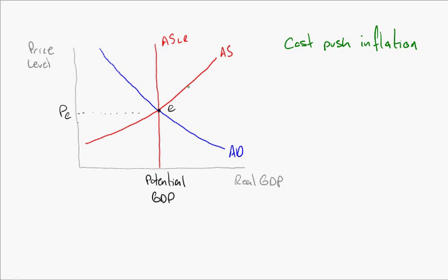Now let's look at cost-push inflation. Cost-push inflation occurs when there's some sort of input cost increase — much like in the 1970s when energy prices skyrocketed. This shifts the aggregate supply curve to the left, and the short-run result is that we move from point E to a point like A, and prices increase. We're now in a recessionary gap. Governments might want to increase aggregate demand, but doing so will only increase prices again — if you increase demand once the supply curve has shifted left, you'll just end up at a higher price.